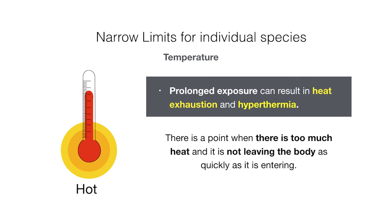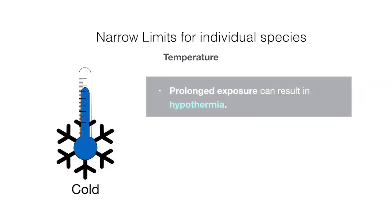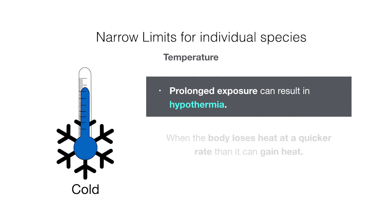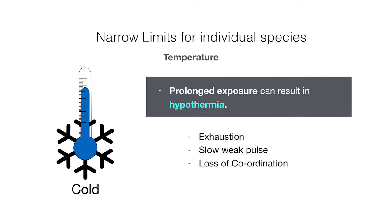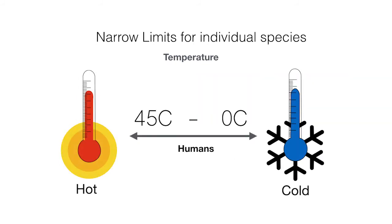Whilst homeostasis removes heat from the body when you are overheating, there is a point when there is too much heat and it is not leaving the body as quickly as it is entering. The body's constant internal temperature will not be maintained and that's when you'll feel like rubbish. The same thing happens with cold temperatures, which can lead to hypothermia — when the body loses heat at a quicker rate than it can gain heat. Although homeostasis can try to minimize heat loss, if the body is losing too much heat, then homeostasis won't be possible. Symptoms of hypothermia include exhaustion, slow and weak pulse, and loss of coordination. This is why humans can only live in the narrow range between 0 to 45 degrees Celsius, with 25 degrees being the optimal temperature.